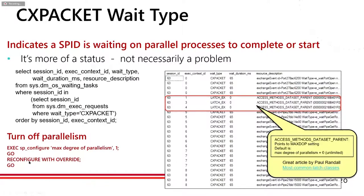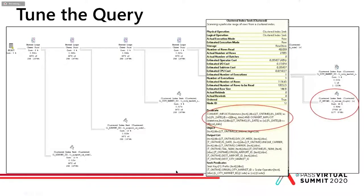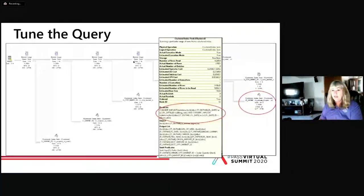I could have given the query a hint to turn off parallelism just for that query, but as a rule, I don't like to leave max degree of parallelism at default. I always set it to 1 at the instance level and then reconfigure. After doing that, it stopped all that parallelism, but now I saw a warning sign — an expensive implicit conversion on flight date. It was trying to change it to a DATETIME. Because I loaded the data from Excel spreadsheets, everything was loaded as VARCHAR(50).